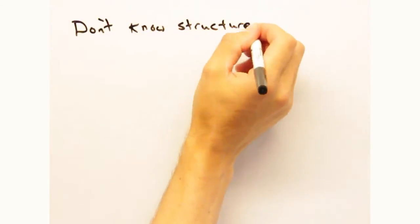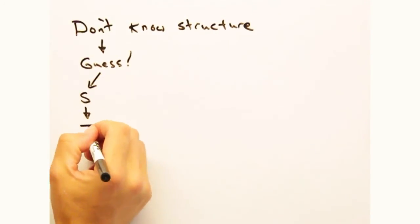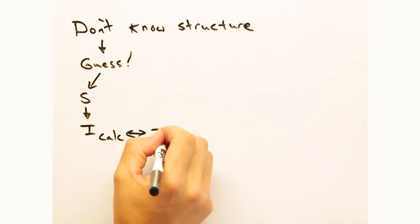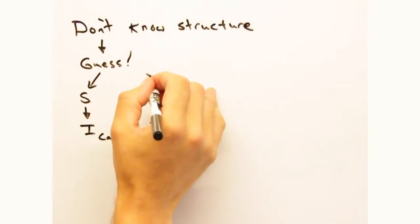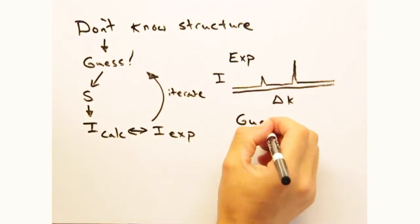In practice, you don't know where your atoms are. Instead, you take a guess at what the structure is, then use the structure factor to calculate the intensity pattern, compare that to experimental data, and then tweak your guesses until they finally match.